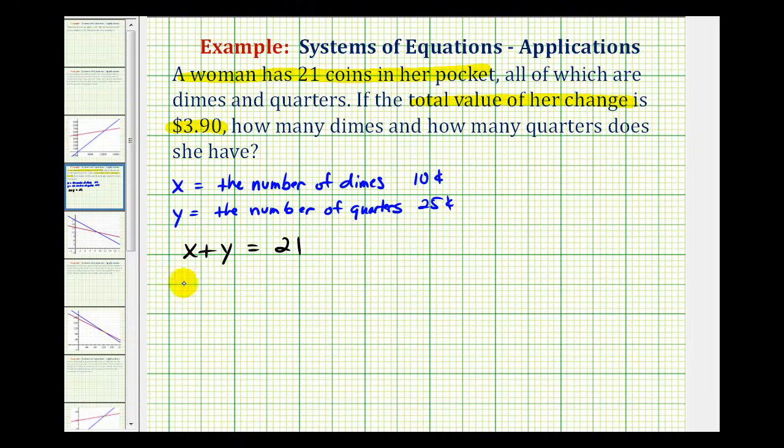So the value from the dimes is going to be 10 cents times x plus the value of the quarters is going to be 25 cents times y. And this must equal $3.90, which would be 390 cents. Again, we're using cents to avoid having decimals in our equations.